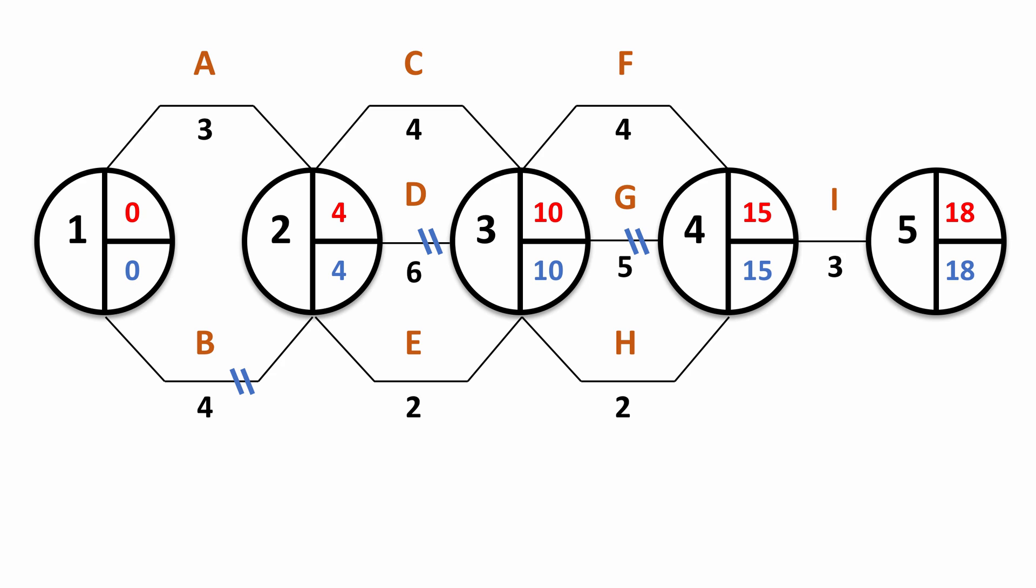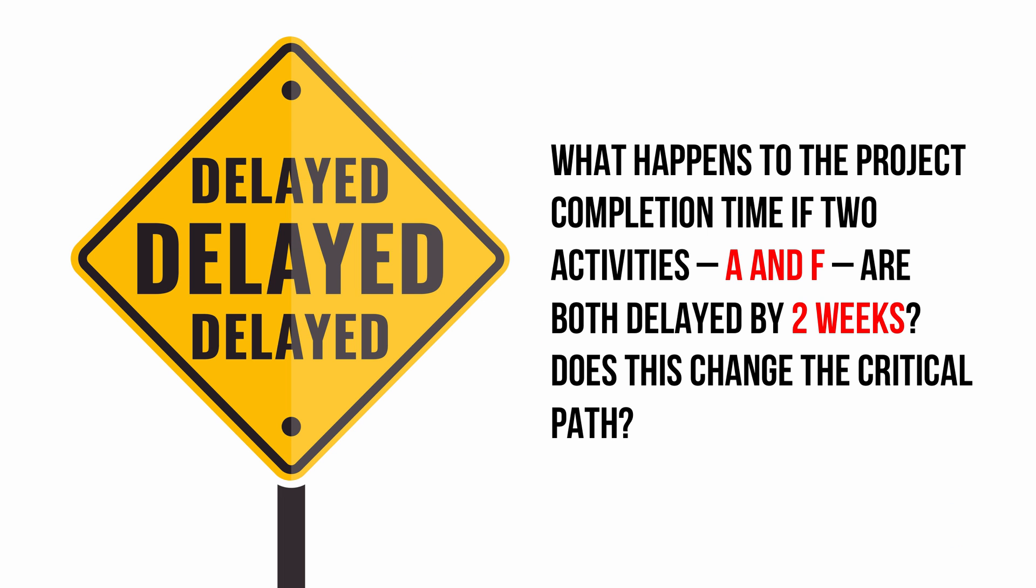So there we go, there's our original project. But what happens if that project completion time is affected or potentially affected by a couple of delays to the project? What happens if activity A and activity F are both delayed by two weeks? Does this change the project completion time? Does it change the critical path? Well both being delayed by two weeks, you might think well that's a four week delay, but it may not necessarily impact the completion time, it depends whether there are other activities that are actually on the critical path.